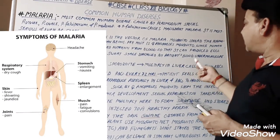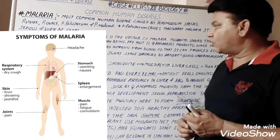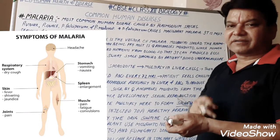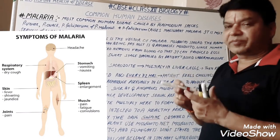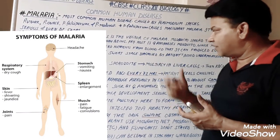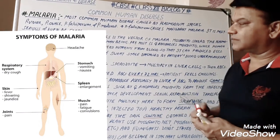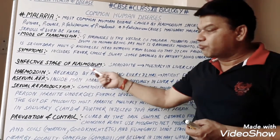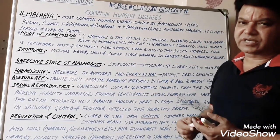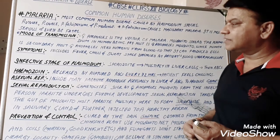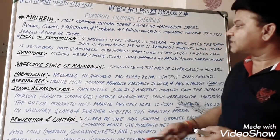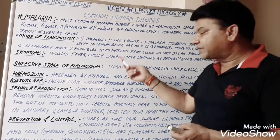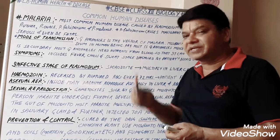Malaria is diagnosed by examining the patient's blood under a microscope. Now, the infective stage of Plasmodium — this is a very important one-mark question. The infective stage of Plasmodium is the sporozoite. The sporozoite is the infective stage for human beings.